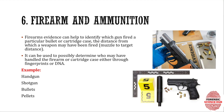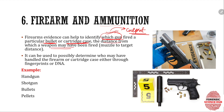Next we have firearm and ammunition. Firearm is one of the most commonly used weapons for committing crimes, and requires ammunition. Firearm evidence can help identify which gun fired a particular bullet — if a bullet or cartridge case is found at the crime scene, the indentations or scratch marks on the bullet's surface can determine which gun fired it. From the gun, investigators can determine who the culprit is. The distance from which a weapon was fired can also be determined.